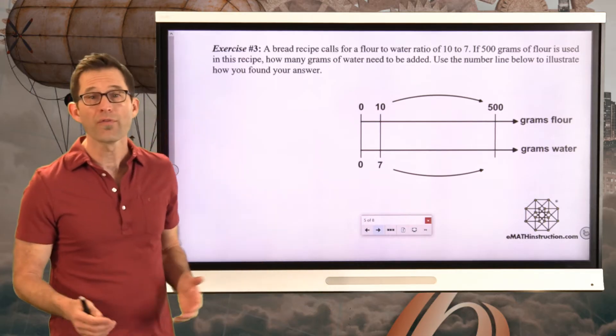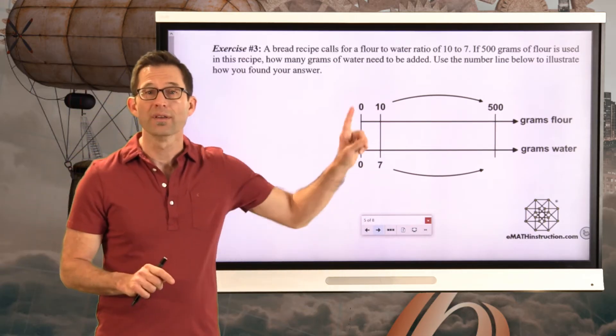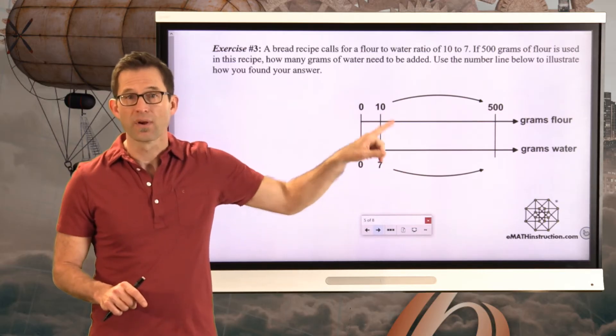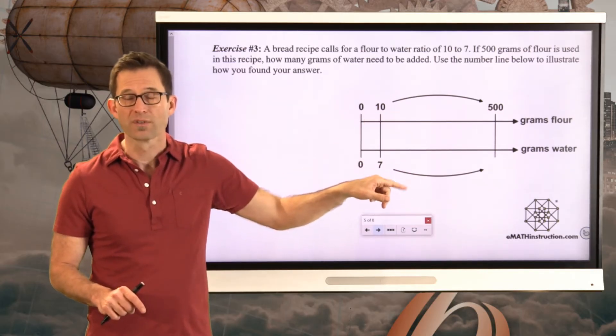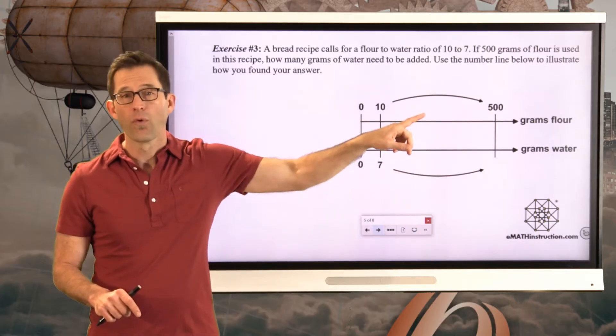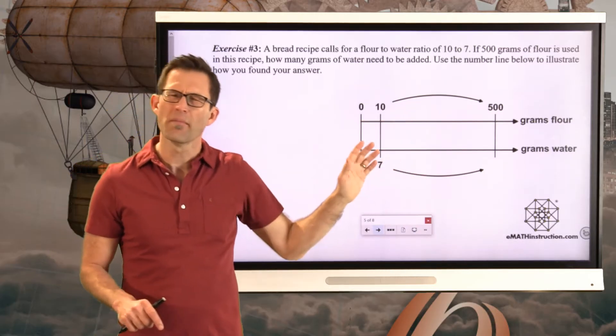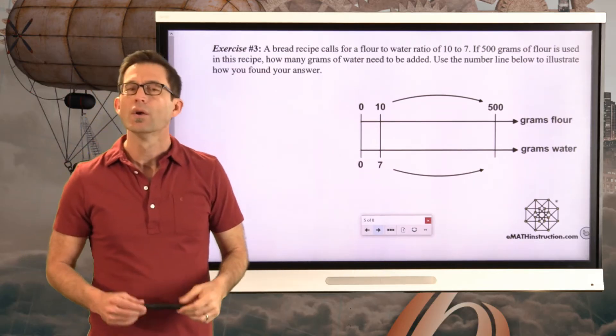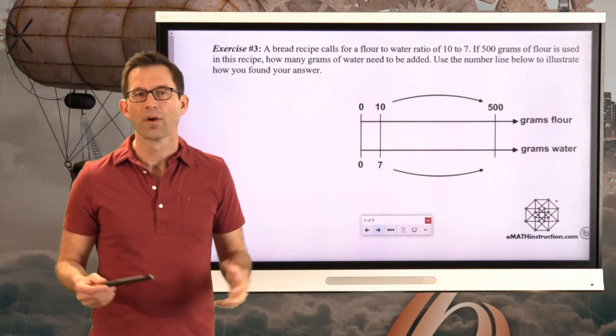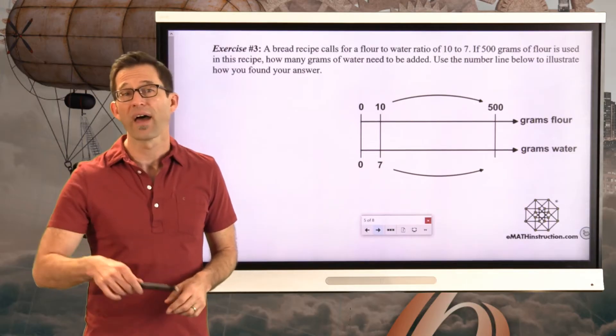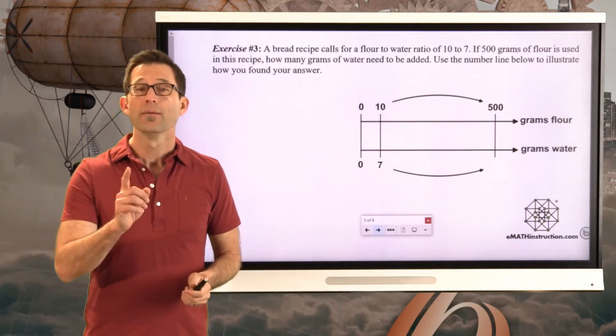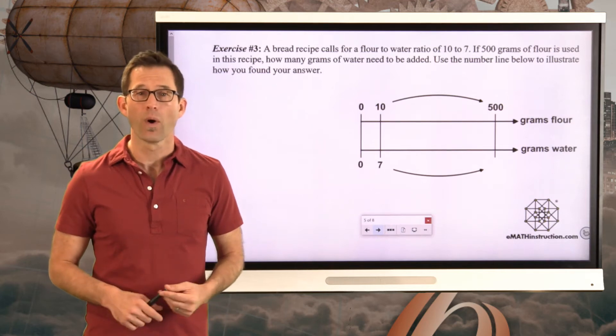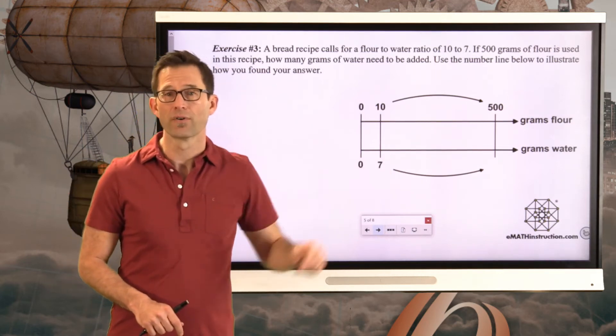So again, we know that the ratio of flour to water is 10 to 7. And we could keep writing out number lines. The next one would be 20 and 14, 30 and 21, 40 and 28, etc. But man, would that take a while to get up to 500 grams of flour. So we have to figure out a different way to do it. And it's all about that scaling factor. So pause the video now and see if you can figure out how many grams of water are needed if we have 500 grams of flour.